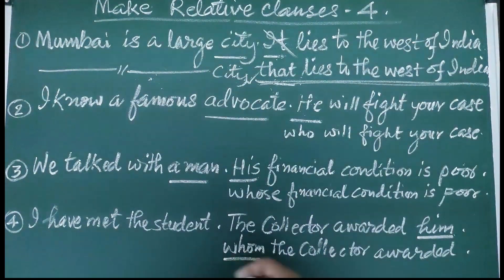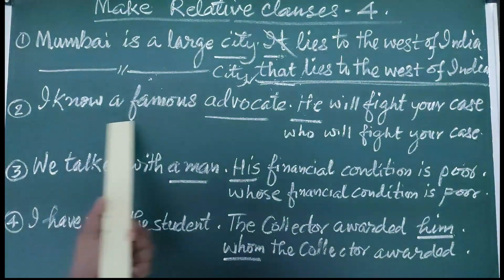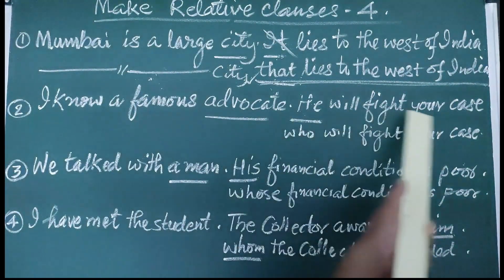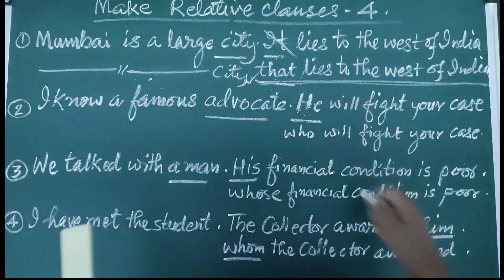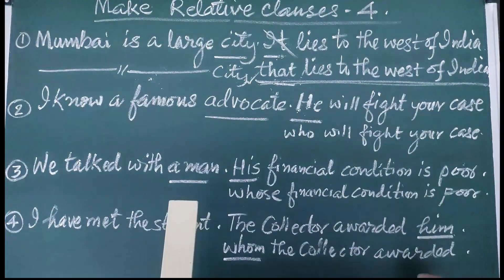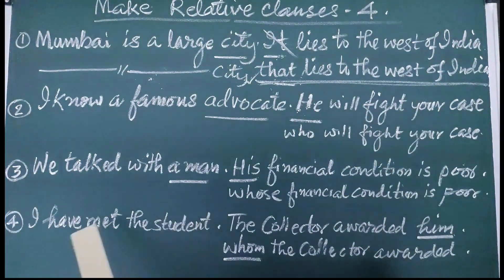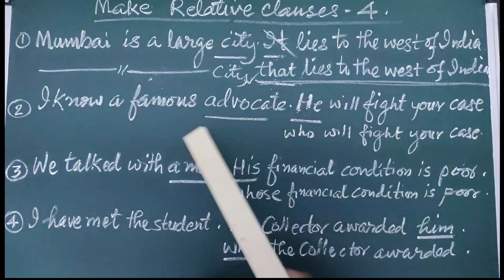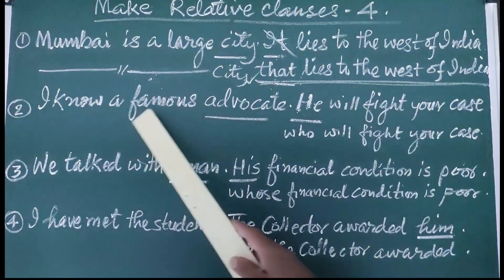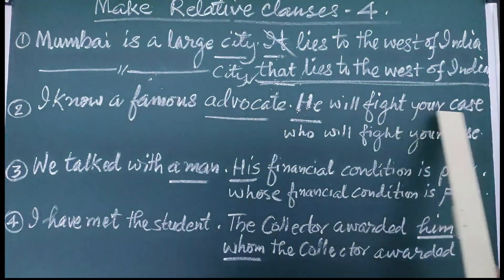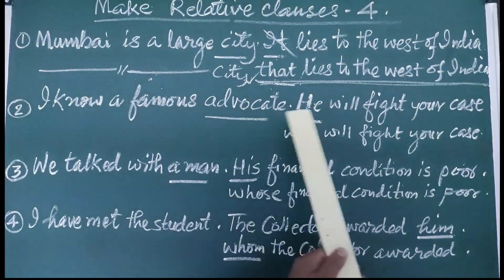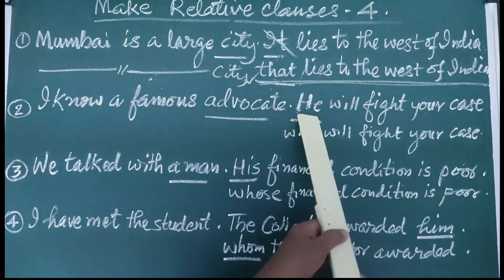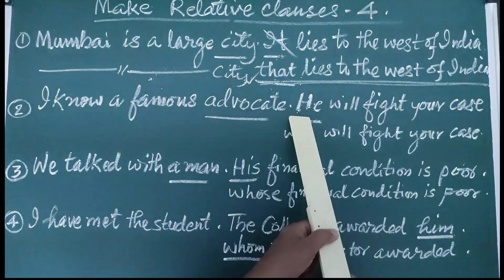Now let us see one more sentence. 'I know a famous advocate. He will fight your case.' Let us find out who the correlatives are. Here, the mention is about 'advocate'. In the second sentence, advocate is replaced by the word 'he'. So this is a noun and this is the pronoun — these two are the correlatives.